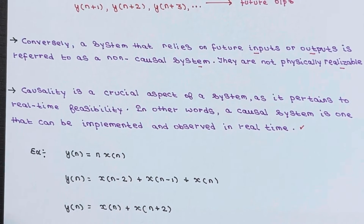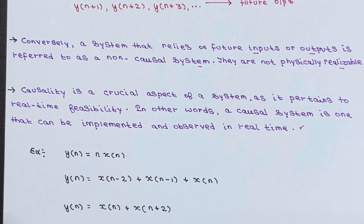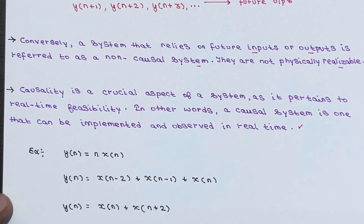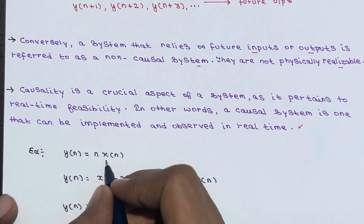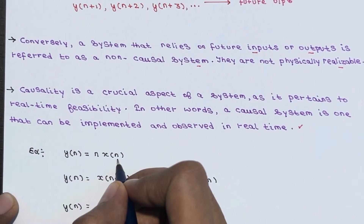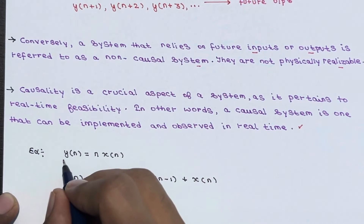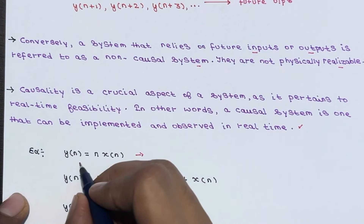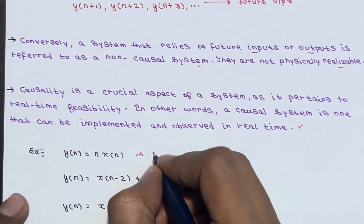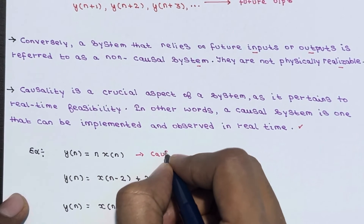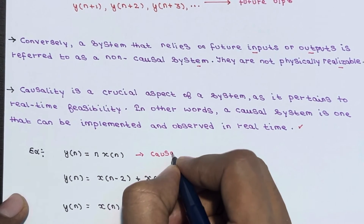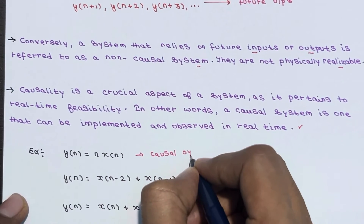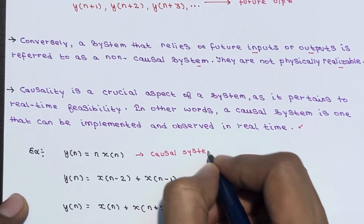Let's see some examples. Suppose y of n equals n times x of n. Here x of n is the present input and y of n is the present output. The output depends only on the present input, so this is a causal system.